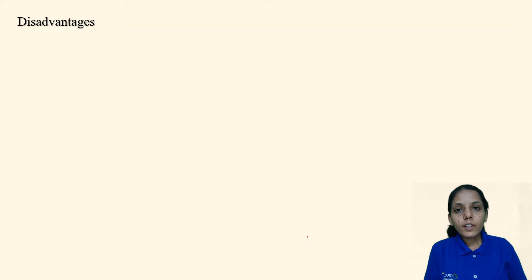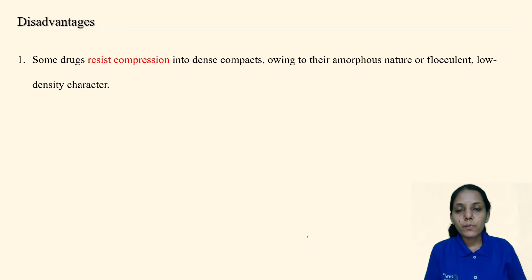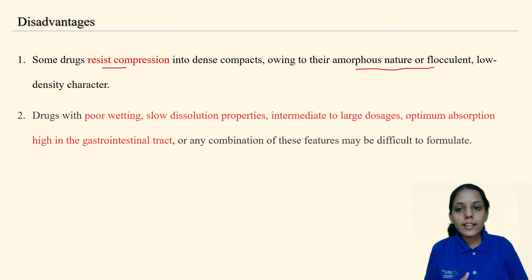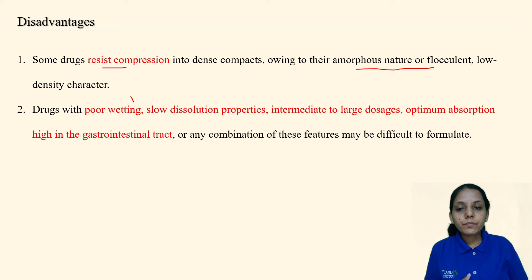There are always pros and cons of any dosage form. Some disadvantages: some drugs resist compression — for example, if a drug has very high bulkiness, it is difficult to compress because the powder will move out. So some drugs resist compression into a dense compact because of their amorphous or flocculent nature. Drugs with poor wetting properties also pose a challenge, since the tablet must dissolve in gastrointestinal fluid.